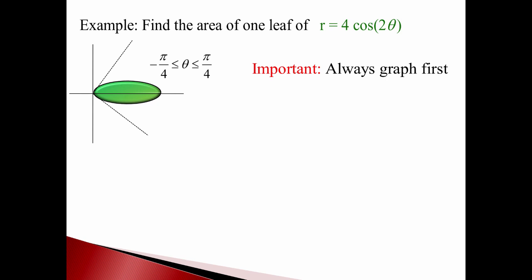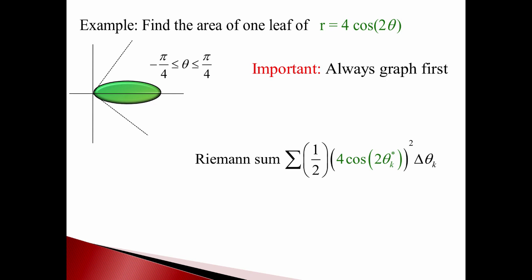We're going to find the area of just one of them. All we need is a part that goes from negative π/4 to π/4, to get this green leaf. We break this leaf up into lots of little sectors and add up the pieces. The area of each sector will be ½ the radius squared times delta theta. So I have the sum of ½(4cos2θ)² delta theta, which becomes a dθ in my integral — an integral of ½(4cos2θ)² dθ, integrating from negative π/4 to π/4.